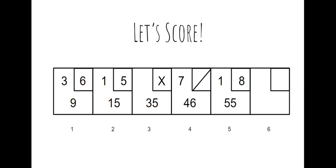Frame six: my first roll I knock down zero pins, so I put a zero in that spot so I know there was a roll of the ball. Then on my second roll I knock down six pins. I take my game total of 55 plus zero plus six, and my new total is 61.